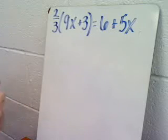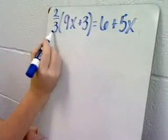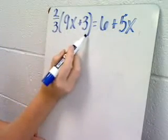This is another equation that involves fractions. In this case, you're multiplying 2 thirds times 9x and 2 thirds times 3.